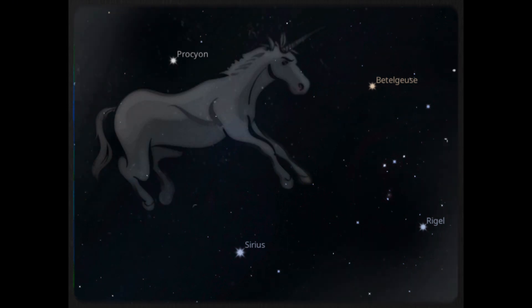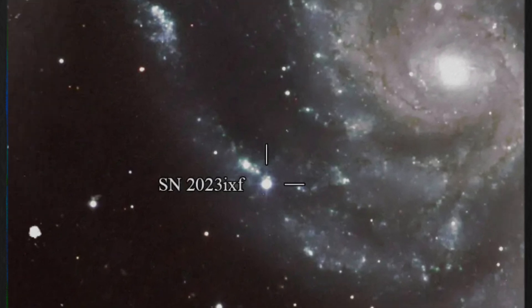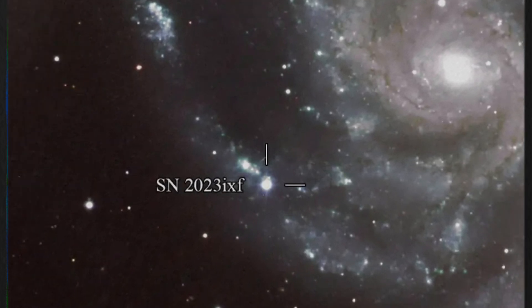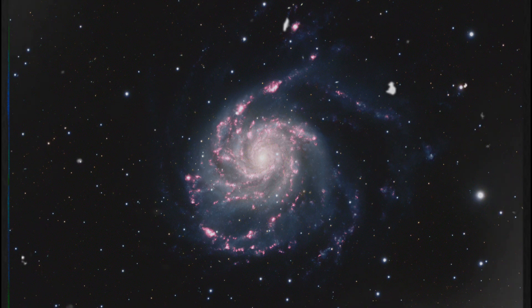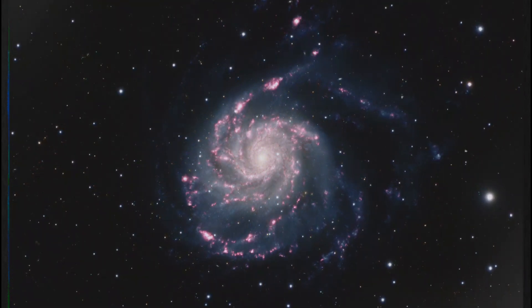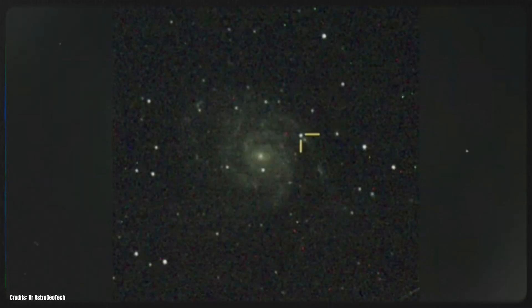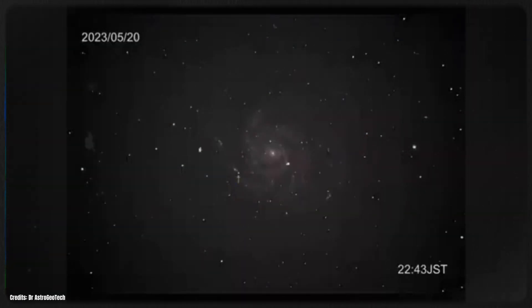While astronomers are focused on Betelgeuse, another stellar event is capturing attention, the supernova SN2023EXF. This incredible explosion took place in the pinwheel galaxy Messier 101, which is just 21 million light years away. Discovered in May 2023, SN2023EXF stands out as the closest supernova observed in recent years, offering scientists a rare opportunity to study the final moments of a star.